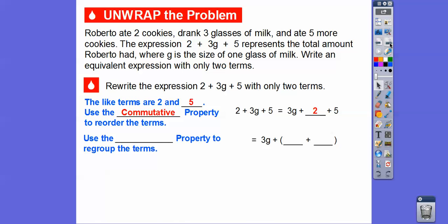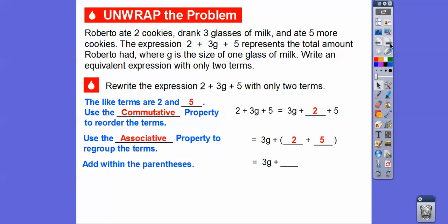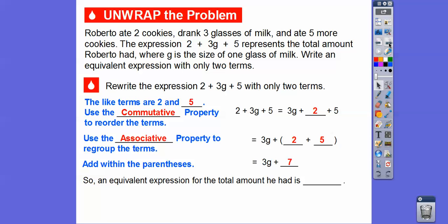Now we're going to use the blank property. They give us parentheses — that's the code word for associative property. We're going to associate the 2 and the 5, which are like terms, and group them together. Using the associative property, we add 2 plus 5 inside the parentheses, which gives us 7. So there are two terms right there: 3g plus 7. We combined like terms — so an equivalent expression for the total amount Roberto had is 3g plus 7.